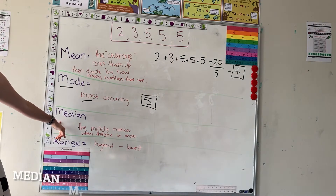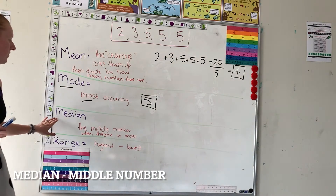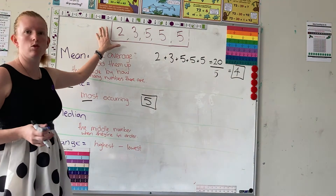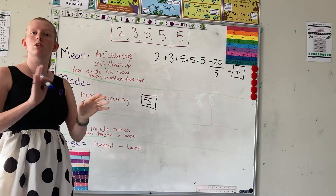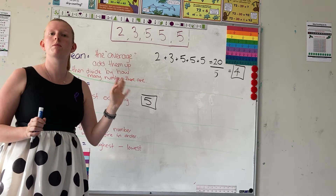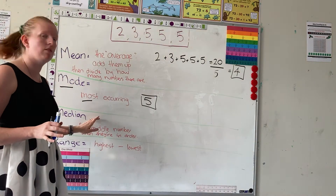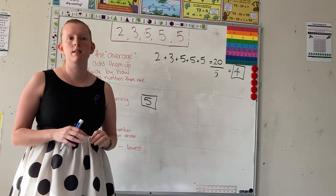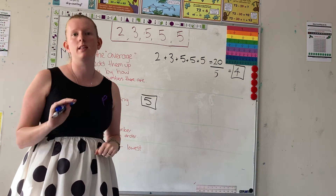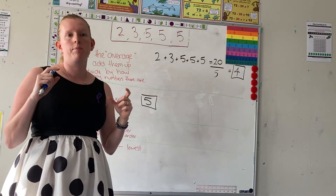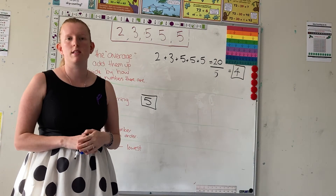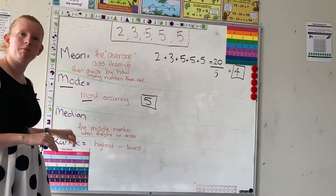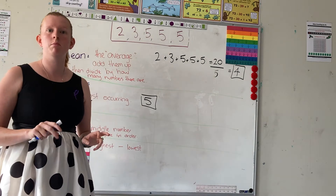Next up is the median. In order to find the median, we need to make sure that our numbers are in order. If you get numbers that are all jumbled up, you need to put them in order from smallest to largest first before you can find the median. The median is the middle number — the number that occurs smack bang in the centre of your data. Think of it as the median strip that's in the middle of the road. Median means middle.